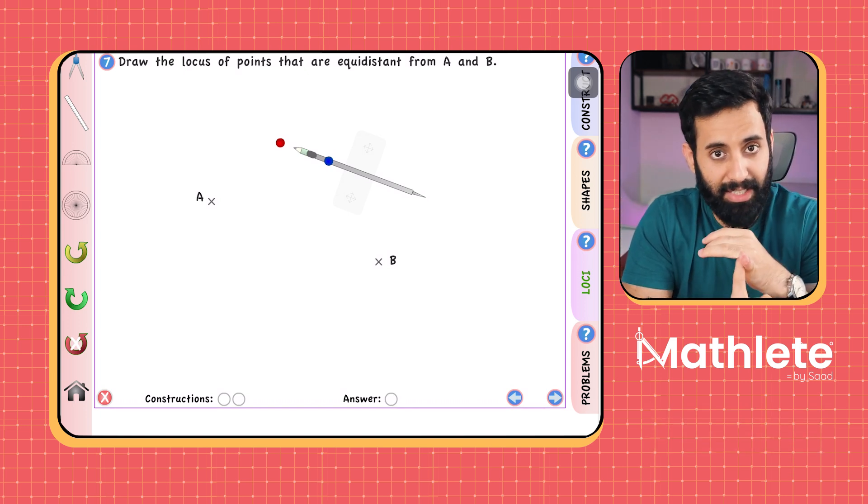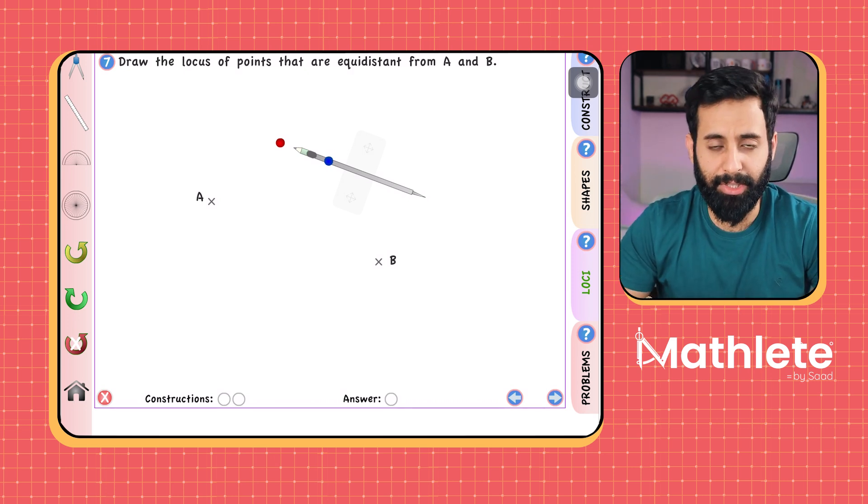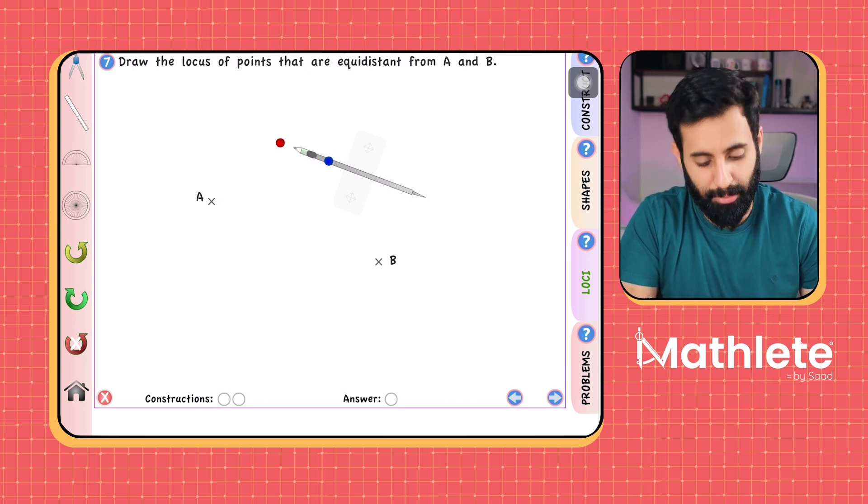So that's exactly what a perpendicular bisector really is. It's a straight line which makes an angle of 90 degrees and passes through the midpoint. You know, it's something that we do in coordinate geometry as well. But in coordinate geometry, we only learn how to find out the equation of perpendicular bisector.